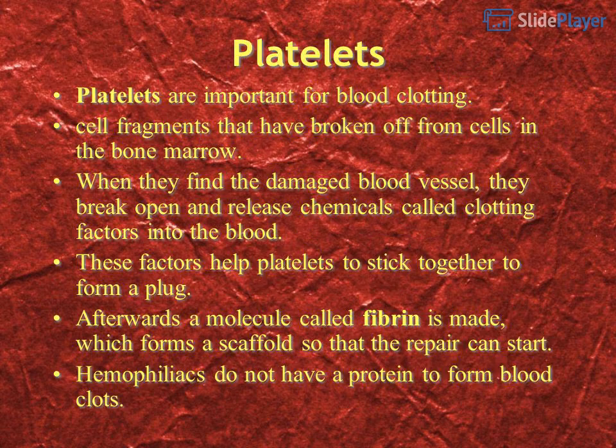Platelets are important for blood clotting. They are cell fragments that have broken off from cells in the bone marrow. When they find a damaged blood vessel, they break open and release chemicals called clotting factors into the blood. These factors help platelets stick together to form a plug. Afterwards, a molecule called fibrin is made, which forms a scaffold so that repair can start. Hemophiliacs do not have the protein needed to form blood clots.